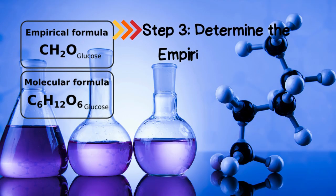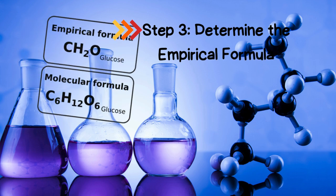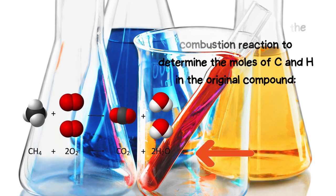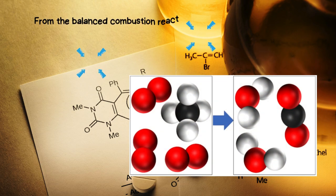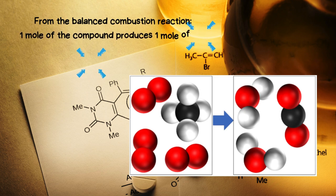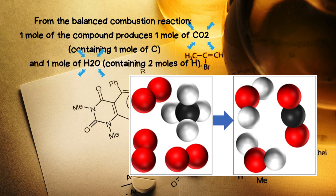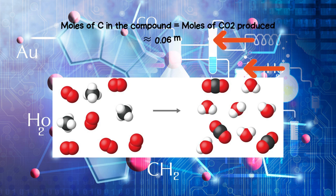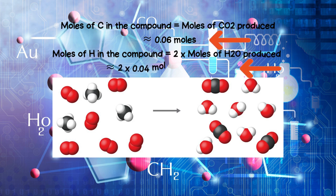Step 3: Determine the empirical formula. Use the stoichiometry of the combustion reaction to determine the moles of C and H in the original compound. From the balanced combustion reaction, 1 mole of the compound produces 1 mole of CO₂ containing 1 mole of C, and 1 mole of H₂O containing 2 moles of H. Therefore, moles of C in the compound equals moles of CO₂ produced = 0.06 moles. Moles of H in the compound equals 2 times moles of H₂O produced = 2 × 0.04 moles = 0.08 moles.